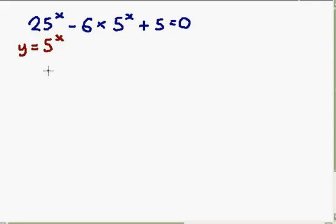So first of all, what we should do is rewrite this equation. You can write 25 as 5 squared, and it's all to the x, so effectively that's 5 to the 2x. And we've got take away 6 lots of 5 to the x plus 5.